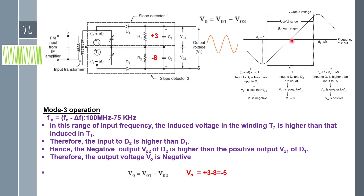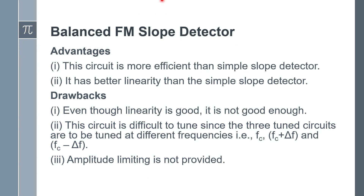By using these three different modes of operation, we are able to generate a positive cycle and negative cycle of the message signal using the balanced slope detector. The balanced slope detector has advantages and disadvantages. This circuit is more efficient than the simple slope detector and has better linearity than the simple slope detector. However, even though the linearity is good, it is not good enough and needs further improvement.